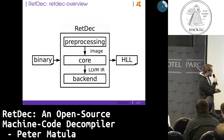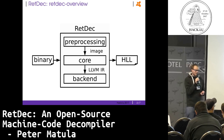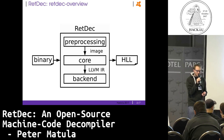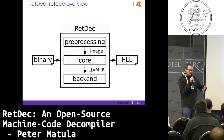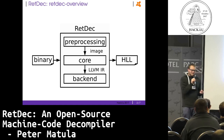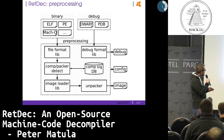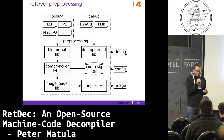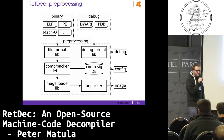The compiler itself is based on the LLVM project and it is using LLVM IR as intermediate representation. Its structure is similar to typical compilers — three parts. It takes a binary and produces some high-level language; in our case it's C. I will go very fast over the structure so you have an idea of what we do and what you can do if you try it.